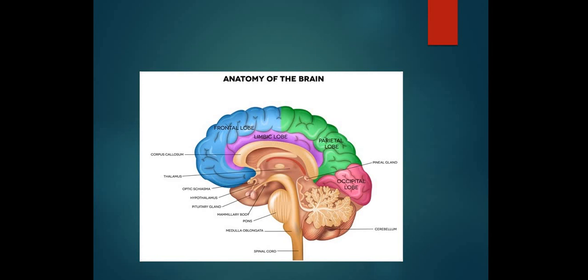Diagram میں باہر والا part cortex ہوتا ہے اور اندر والا Medulla۔ Cortex بیسکلی myelinated axons کے بغیر والی layer ہے جس پر folds ہوتے ہیں — کیونکہ cortex کا surface area بڑا ہوتا ہے اس لیے یہ کھوپڑی کے اندر fit ہونے کے لیے folded ہوتی ہے۔ یہ fold-like structure بناتی ہے۔ Cerebrum کی باہر والی layer کو Cortex کہتے ہیں اور اندر والی کو Medulla۔ Cerebrum میں چار lobes ہوتے ہیں: Frontal، Limbic، Parietal اور Occipital۔ Forebrain کے تین main components یاد رکھیں: Cerebrum، Thalamus اور Hypothalamus۔